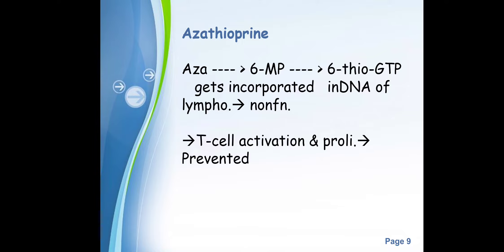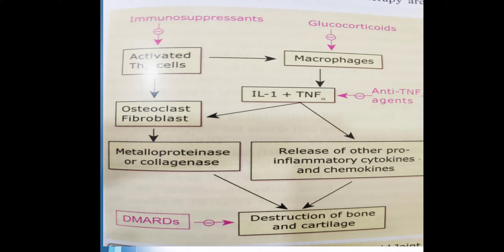Second is azathioprine. Like methotrexate, it is used in cancer treatment by suppressing cell growth. In rheumatoid arthritis, azathioprine inhibits 6-mercaptopurine (6-MP) and ultimately 6-thio-GTP, which gets incorporated into the DNA of lymphocytes making them non-functional, and it prevents proliferation of T cells. By stopping immune cell proliferation, it inhibits the immune response.